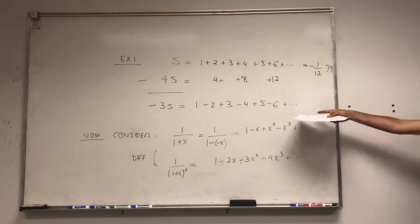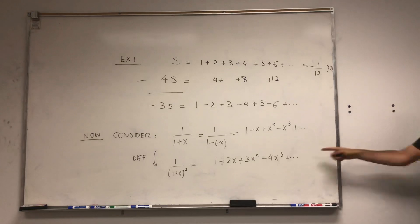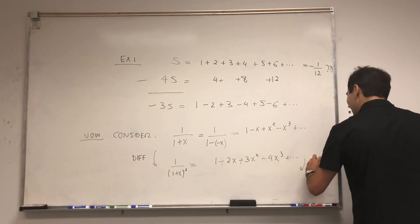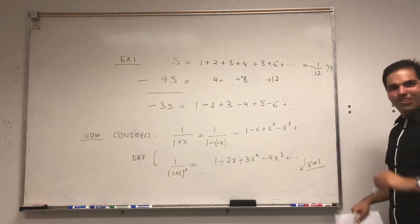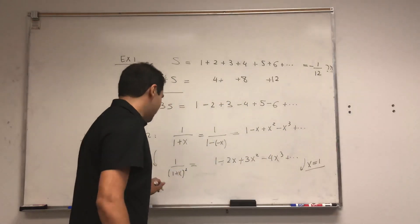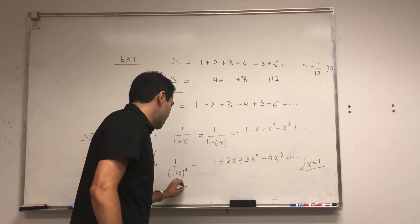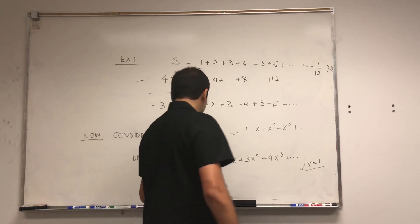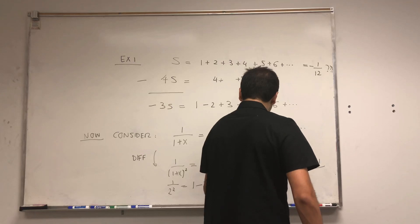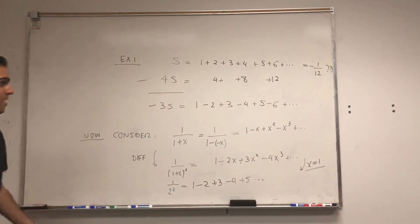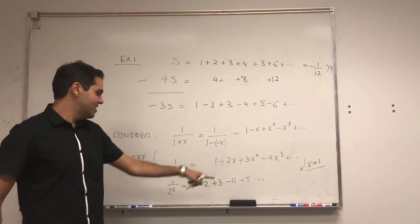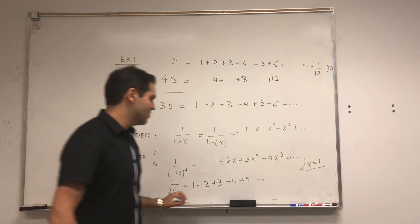What does that have to do at all with this series? Well, notice, just plug in x equals to 1. Again, naively, let's assume we're like bad boys and we don't care about radius of convergence. Then on the one hand, this becomes 1 over 2 squared. On the other hand, this becomes 1 minus 2 plus 3 minus 4 plus 5, etc. So in other words, this whole series of alternating integers just equals to 1 quarter.